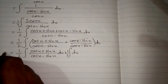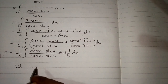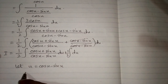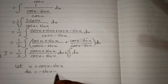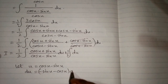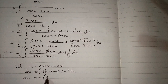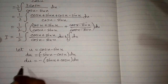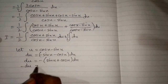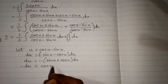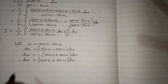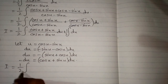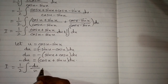Now suppose this integral is i, and let u equal cos x minus sin x. So the differential du is equal to the derivative of cos x, which is minus sin x, minus the derivative of sin x, which is cos x, multiplied by dx. Taking minus common, we have minus du equal to sin x plus cos x dx, which by the commutative law can be written as cos x plus sin x multiplied by dx.